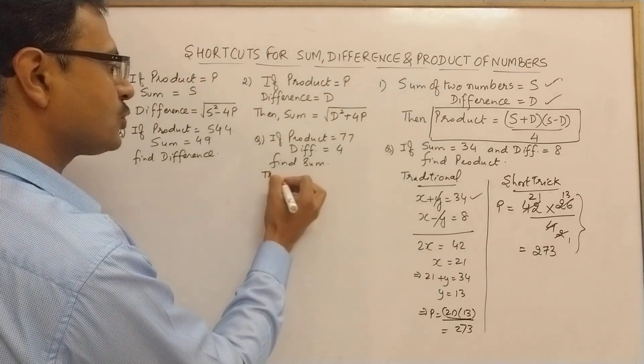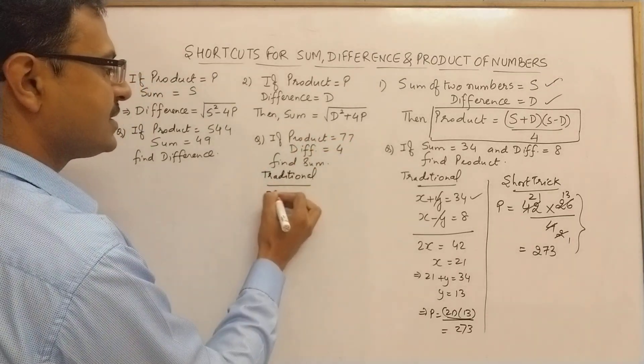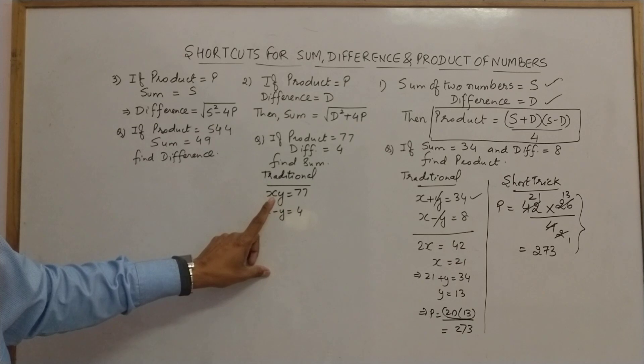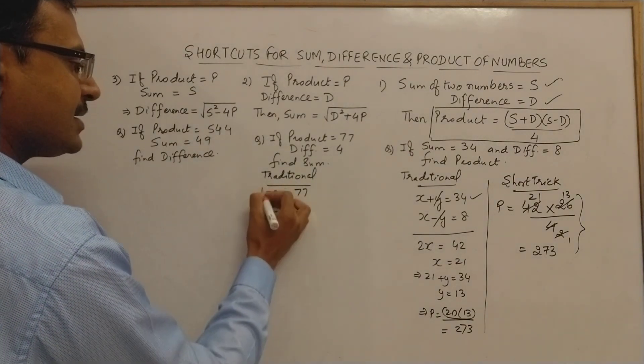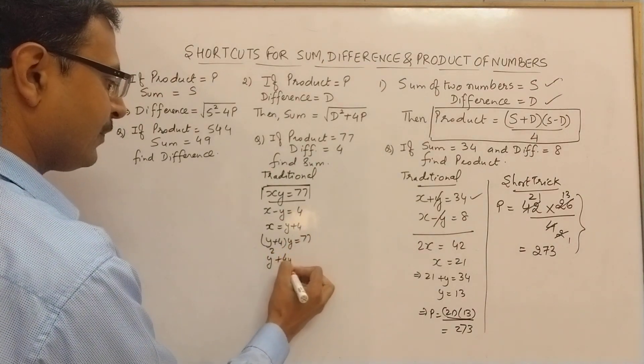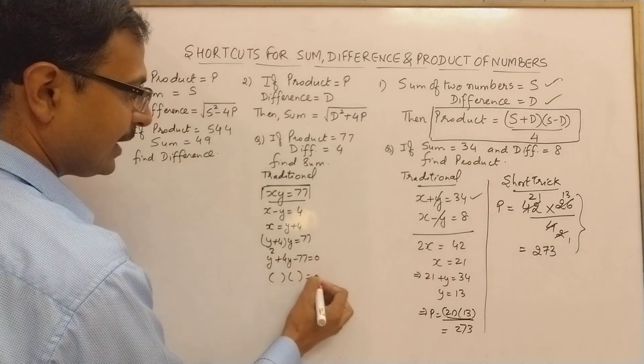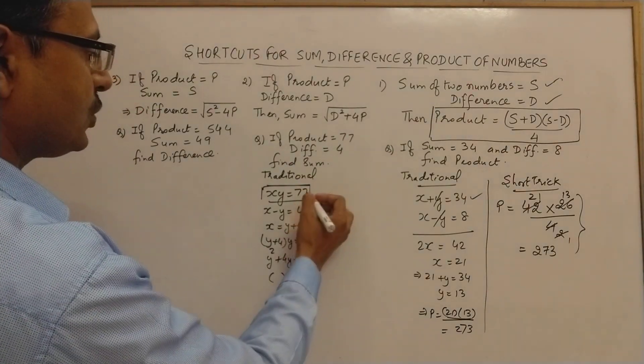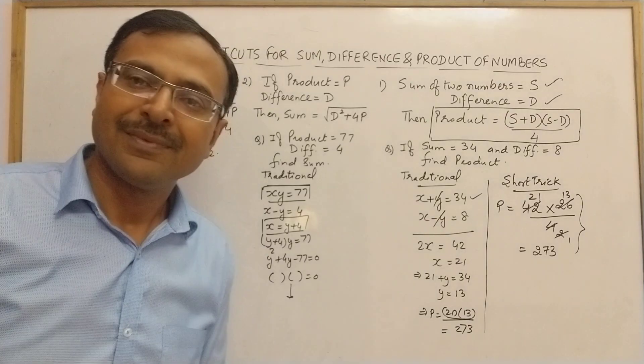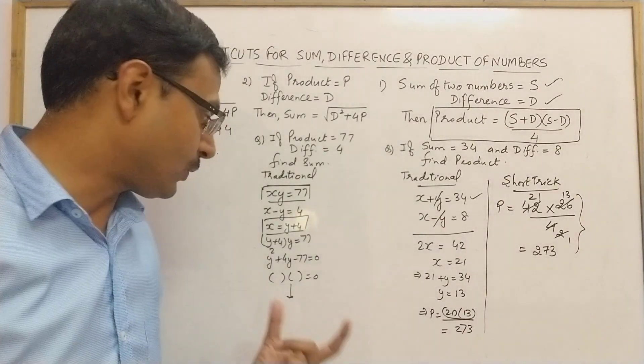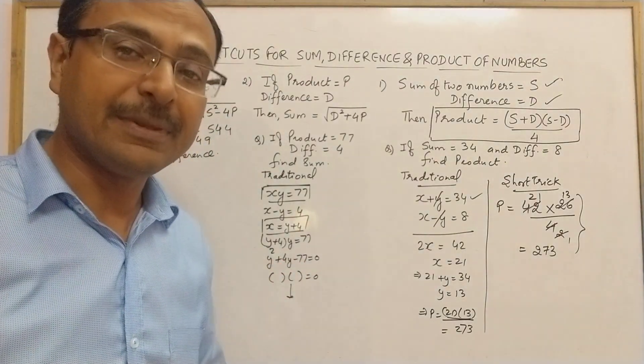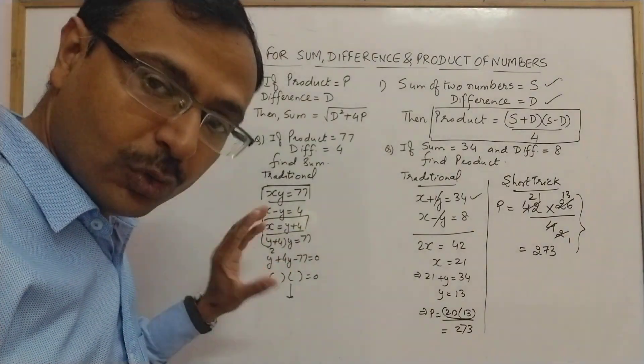Using the traditional approach: product is 77 means xy=77, difference means x-y=4. From this you get x=y+4, substitute to get (y+4)y=77, which gives quadratic equation y²+4y-77=0. You need to factorize, get two values of y, reject one, substitute to get x, then find the sum. This is only half complete.